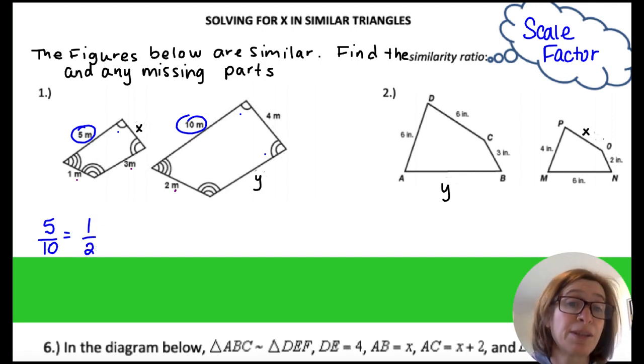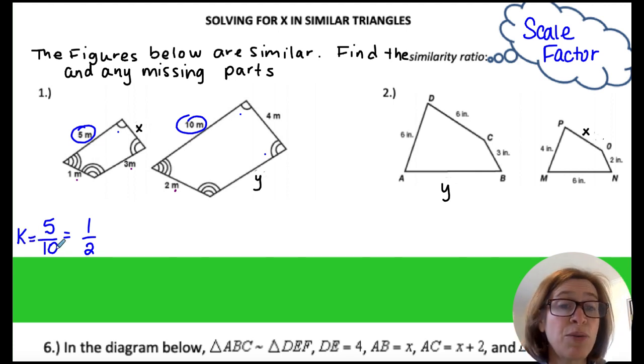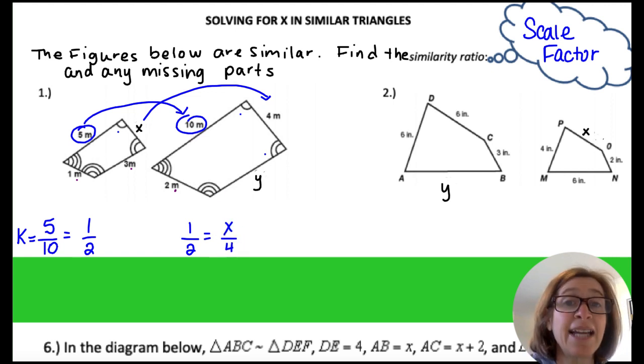Now the scale factor or similarity ratio, I use the variable K just to indicate that. So K is 1 half. So now if I have my similarity ratio or my scale factor, I can write a proportion. I can say 1 to 2, this to this has to equal X to 4. Nice easy one right there for you. So then I can see that I don't even have to do any real math here. I can use equal ratios. 2 times 2 gives me 4. So 1 times 2 is going to give me X. So X would be 2.